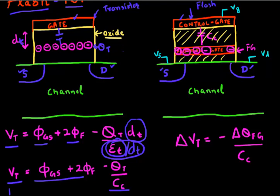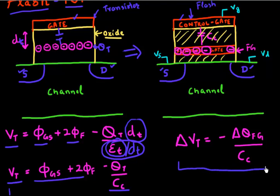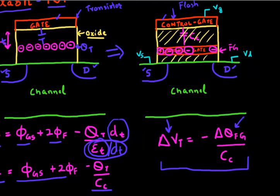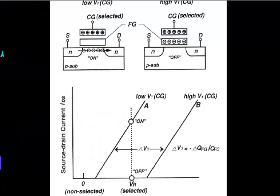Carrying that same analogy over to the flash memory cell, the floating gate is essentially a layer to trap charge. Depending on whether there is charge trapped in the floating gate or not, the threshold voltage will shift by delta VT, given by the change in charge in the floating gate divided by the capacitive coupling. This is the governing principle, borrowed from a published paper.